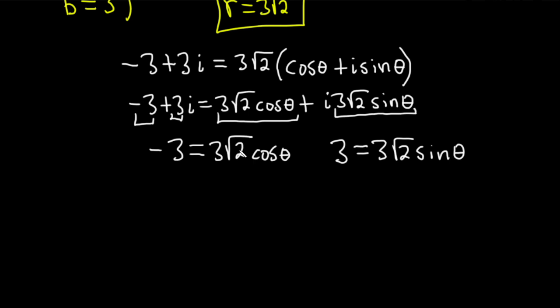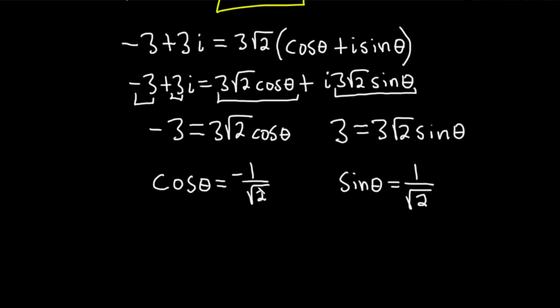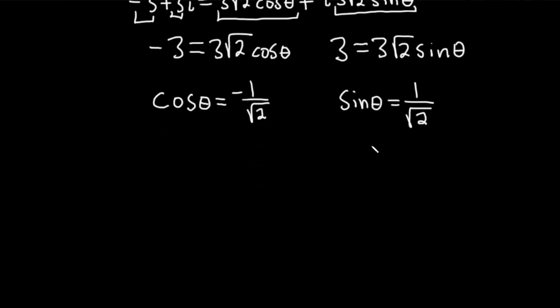We could solve each of these for the trig functions. So we have cosine theta equals, so dividing by 3 root 2, we're just going to get negative 1 over root 2. And over here we get sine theta. Dividing by 3 root 2, we just get 1 over root 2. So we're looking for the angle theta such that the cosine of theta is negative 1 over root 2 and sine of theta is 1 over root 2.